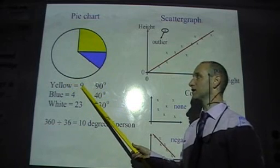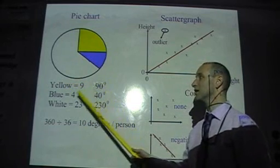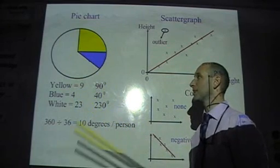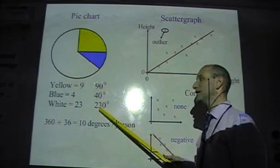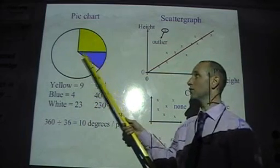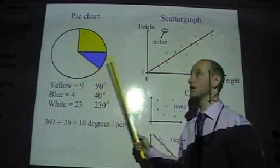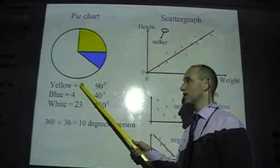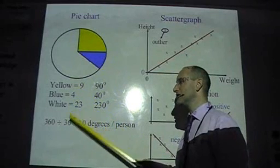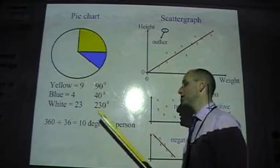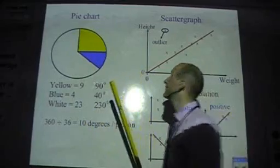So yellow would be, there are nine items, so that's nine times 10, 90. Blue, there are four items. Four times 10 is 40, etc. Make sure at the end that all these sections add up to 360. So I've got yellow, blue, white. I've got no gaps. There should not be any gaps in a pie chart. So, get your data, add it together, divide it into 360, and that tells you how many degrees per item.